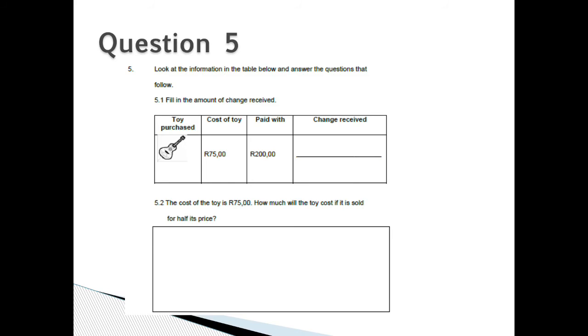Question 5: Look at the information in the table below and answer the questions that follow. 5.1: Fill in the amount of change received. The toy that was purchased was 75 Rand and we paid with a 200 Rand note, so how much change was received? 5.2: The cost of the toy is 75 Rand. How much will the toy cost if it is sold for half its price?